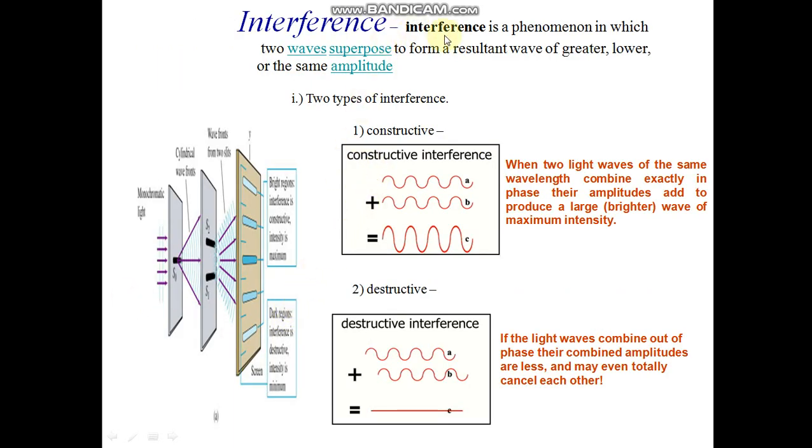Interference. Interference is a phenomenon in which two waves superpose to form a resultant wave of greater, lower or same amplitude. Two types of interface. Monochromatic light through slits. When both are in the same wave, this is called constructive interface.